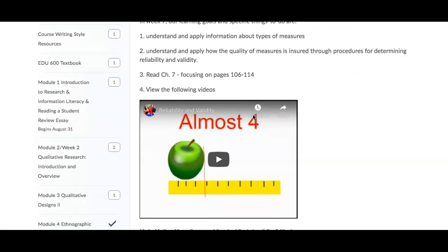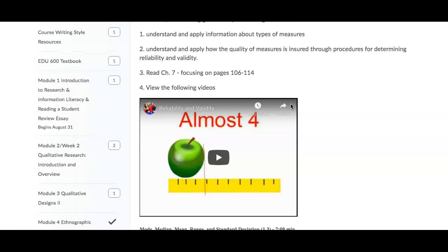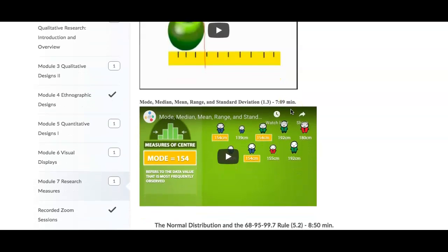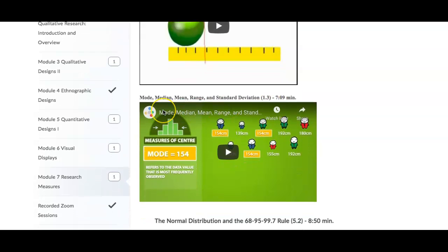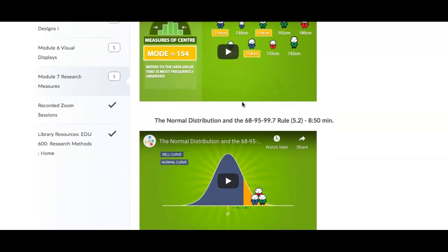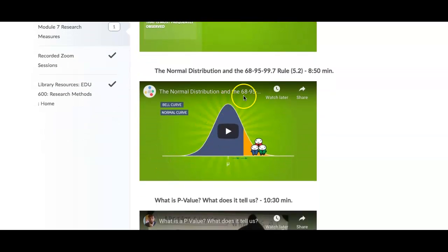There's a whole bunch of videos that I posted on reliability and validity. These are quite important to understanding how to analyze and make sense of quantitative research. I also put this one on mode, mean, median, range, and standard deviation—that's a seven-minute video. The normal distribution is really important to understand the bell curve, normal curve.